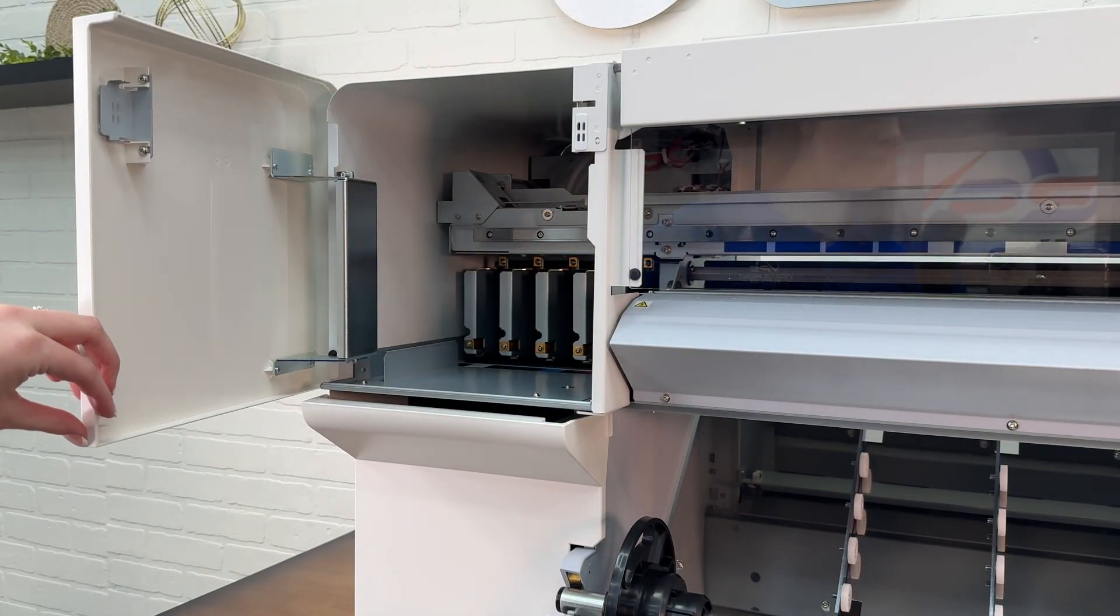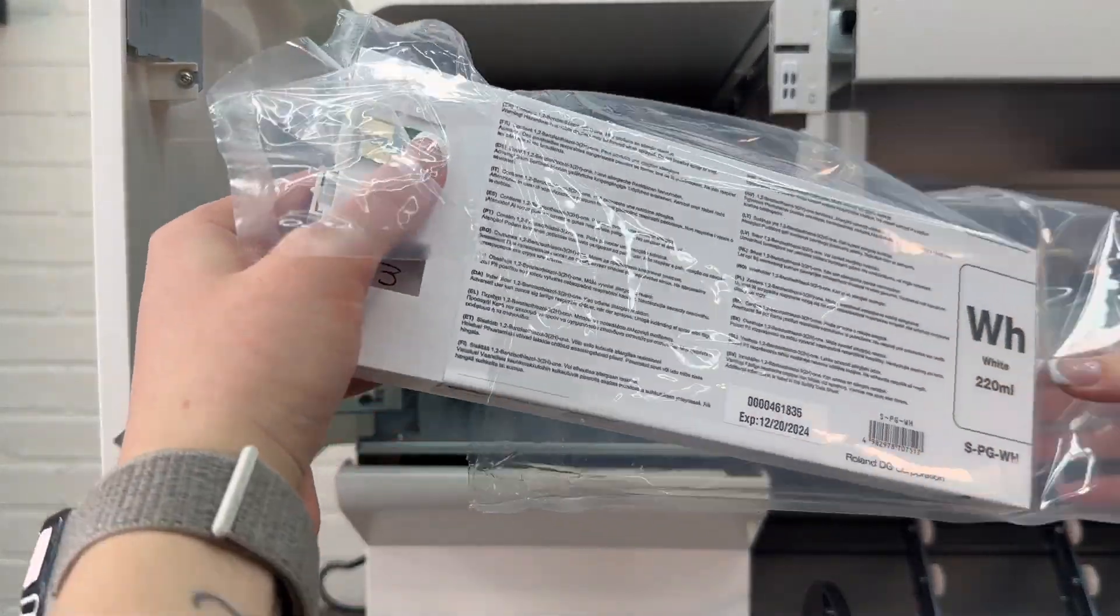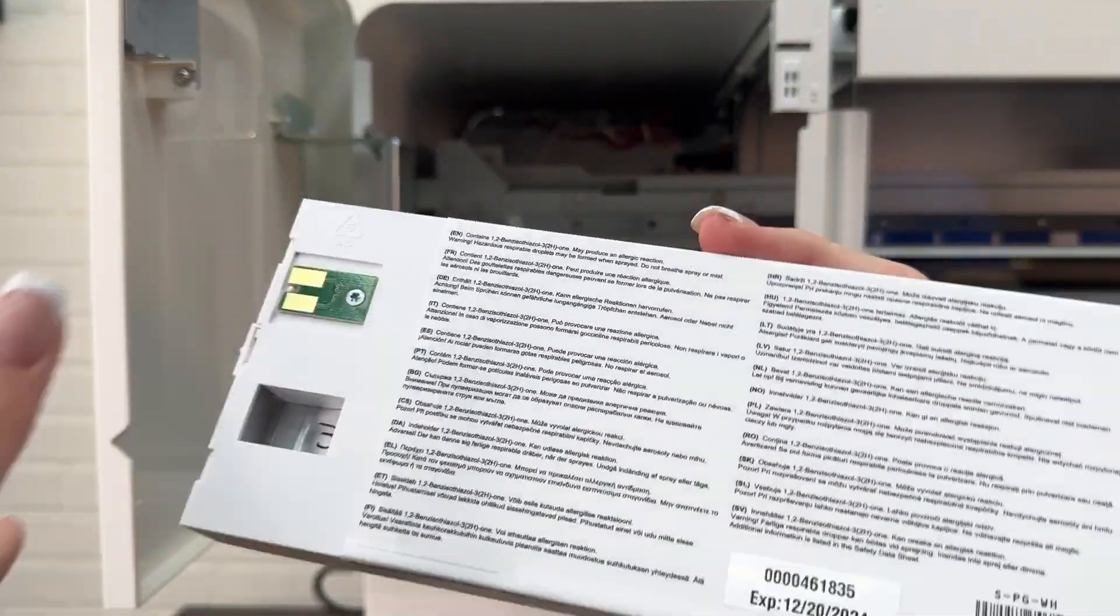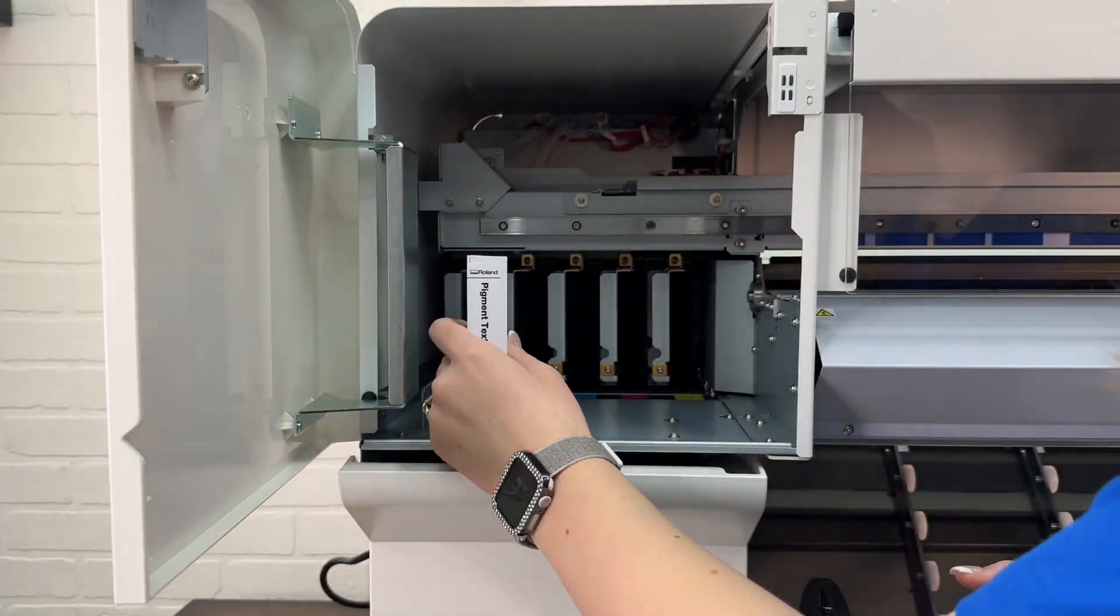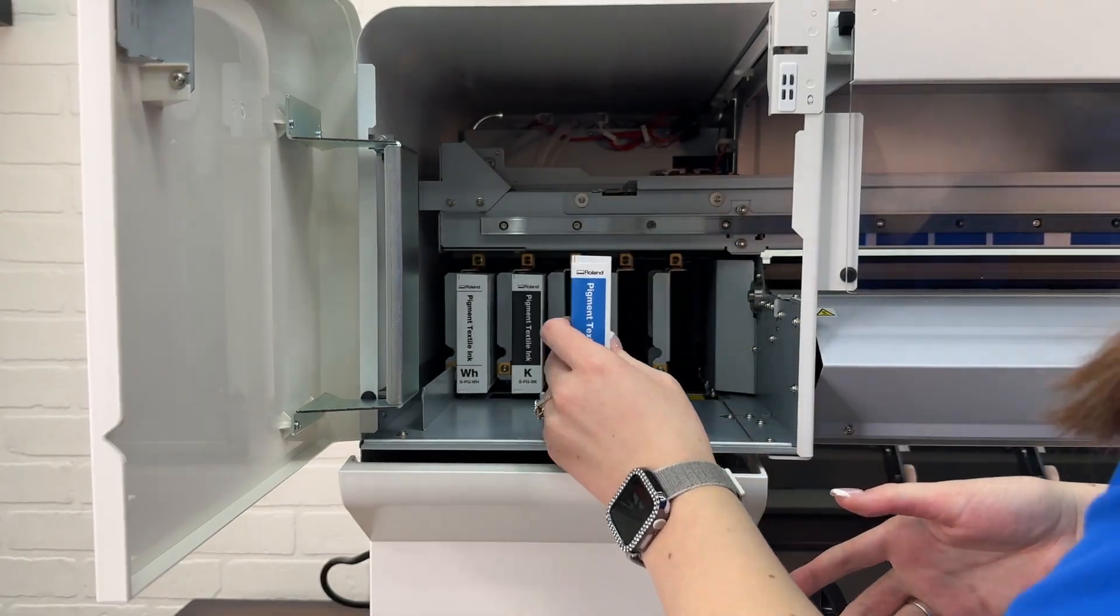Now we're going to do the ink up process. Before inserting the ink cartridges, we need to shake each one about 50 times for about 20 seconds or so. The reason we do this is so if the ink is settled we can shake it and it can all mix back up.